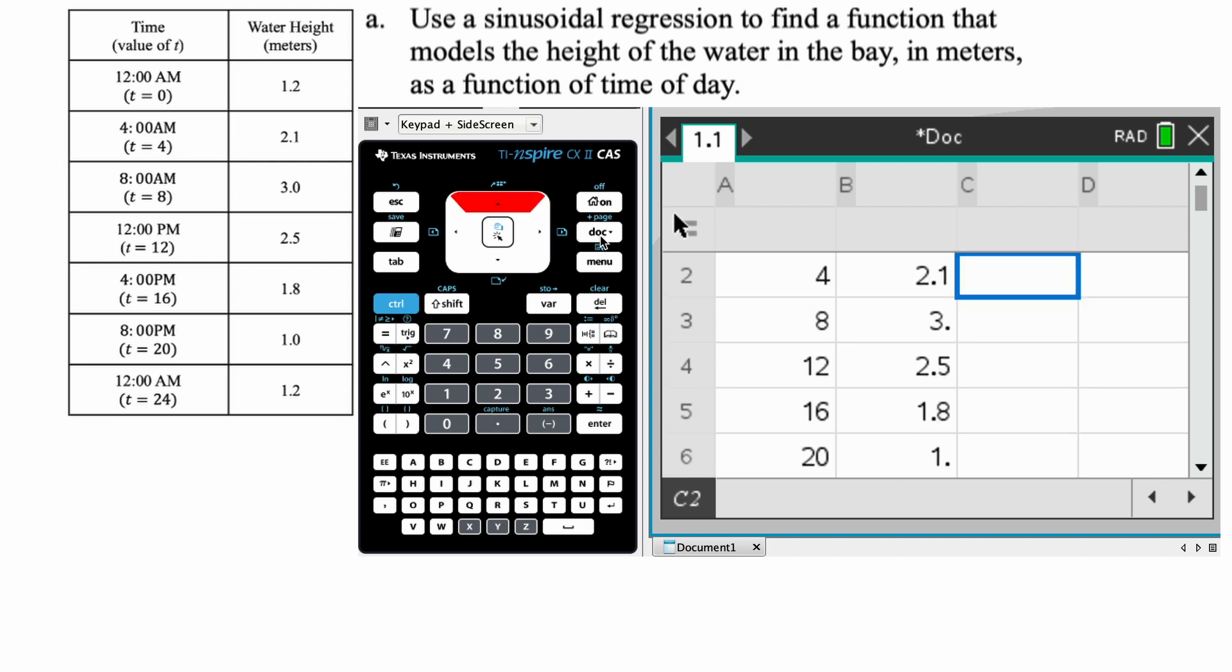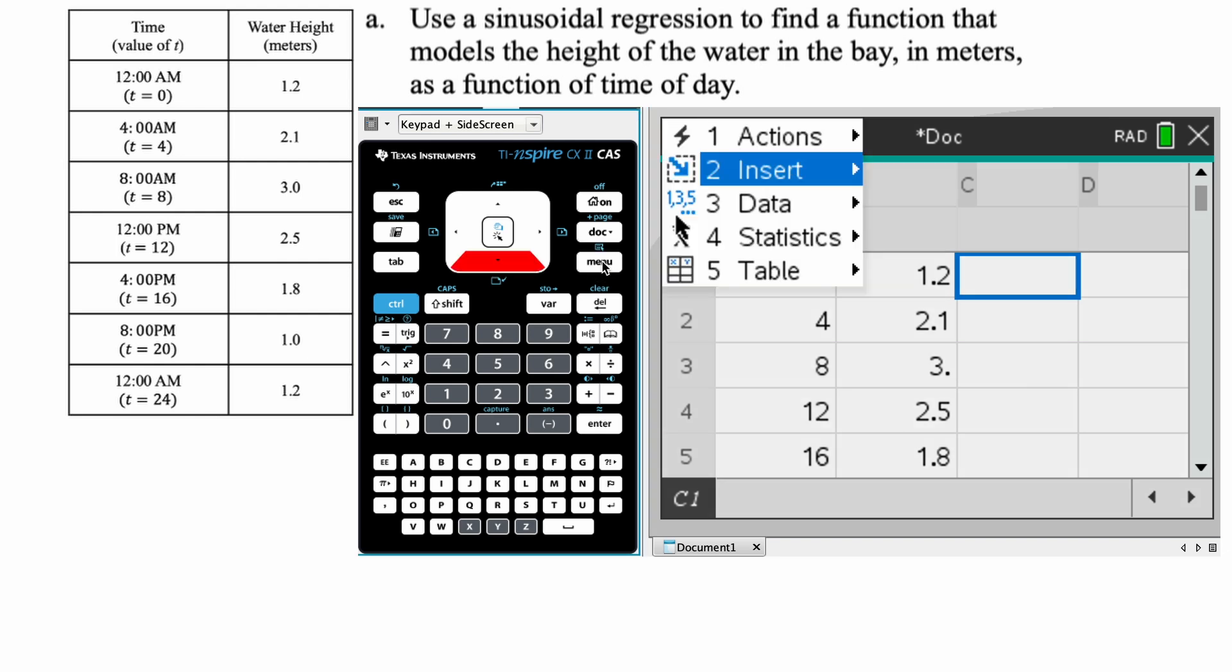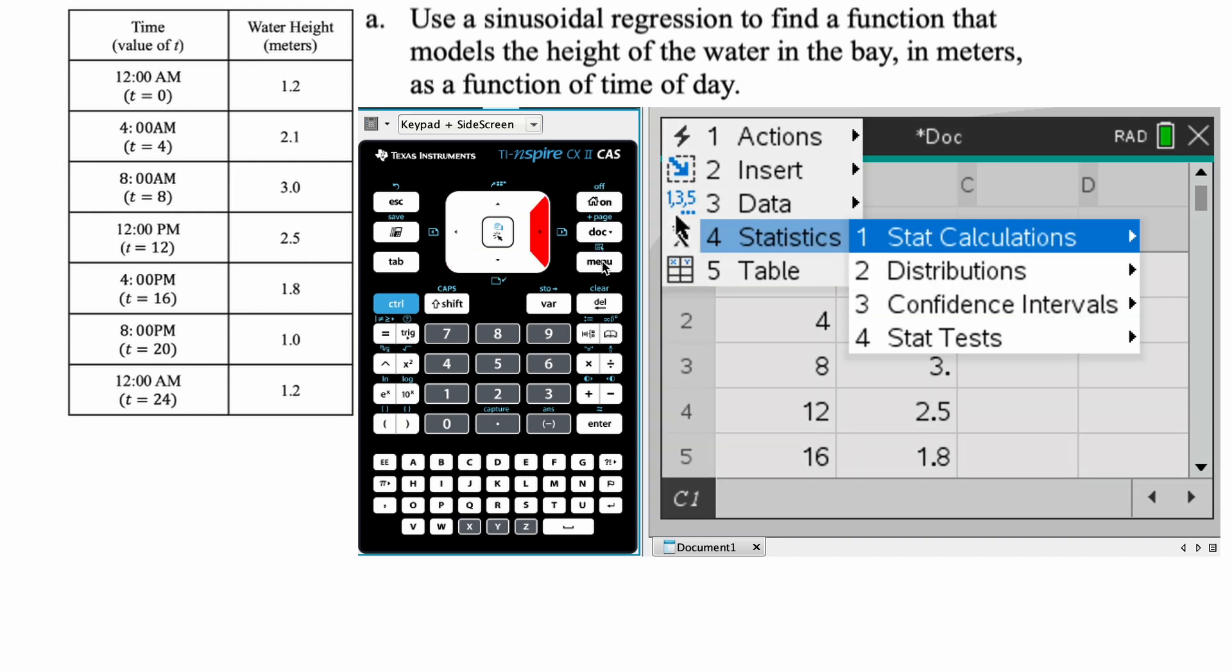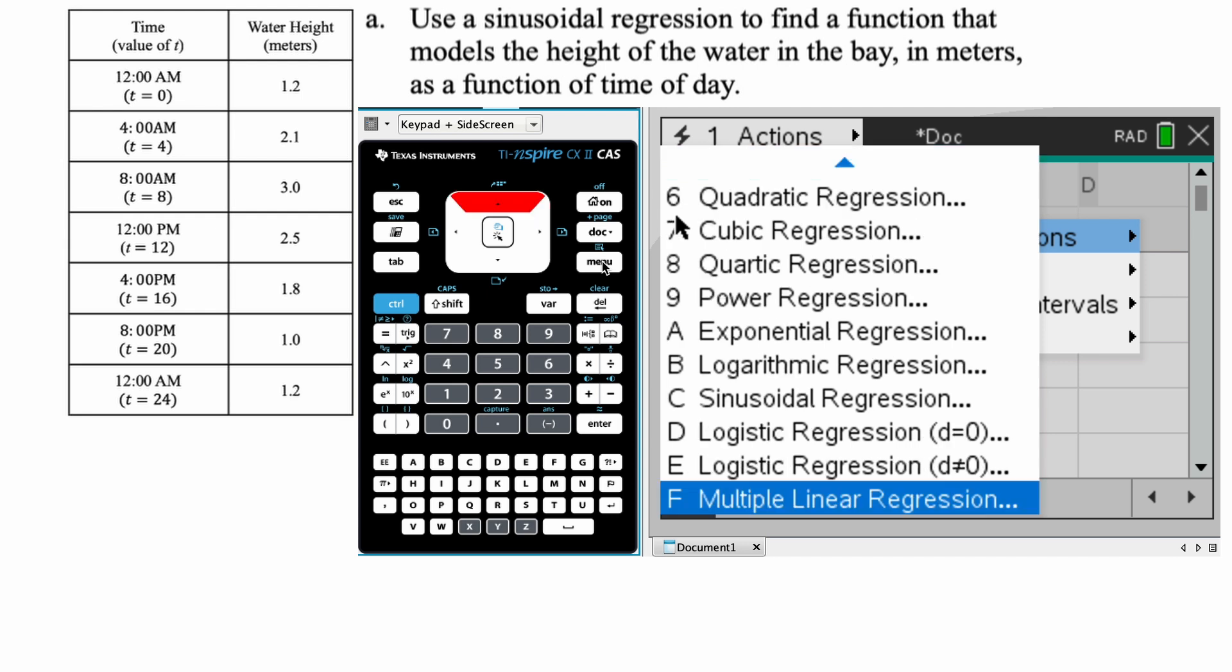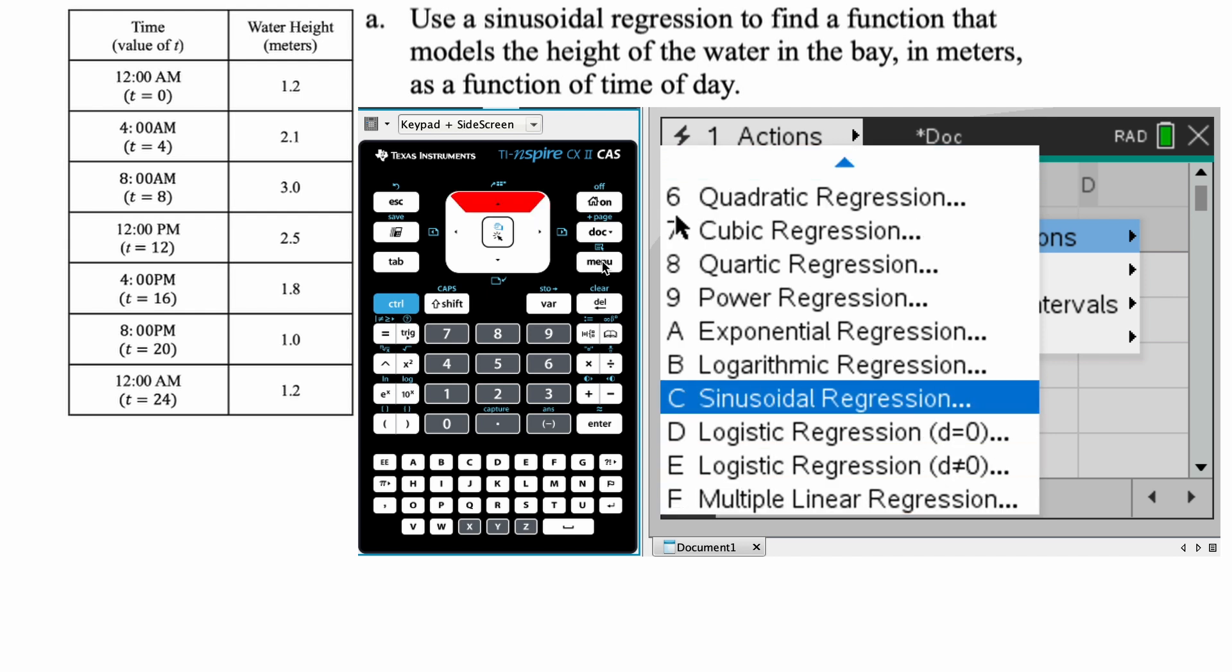Now what I like to do is I go back up to the top, and in this cell, so in C1, what I'm going to do is I'm going to press menu, and I'm going to go down to statistics. So that's option 4, stat calculations. And what we want is sinusoidal regression. So I'm actually just going to press up. You can just press down a lot, but I'm going to press up until I get to C. You can also literally type the letter C, and it will bounce to this. So sinusoidal regression, I'm going to press enter. It's going to ask us some questions.